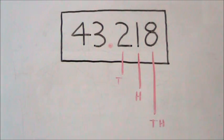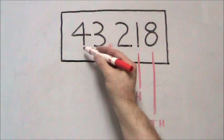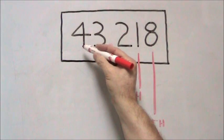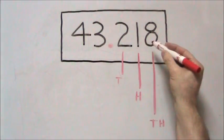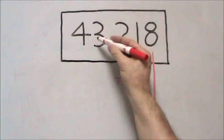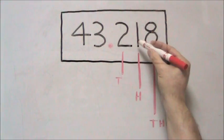One way to remember this is that everything to the left of the decimal is a whole number, and everything to the right of the decimal is a part of the whole number or a decimal number.